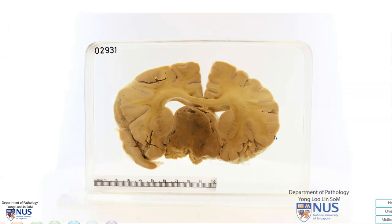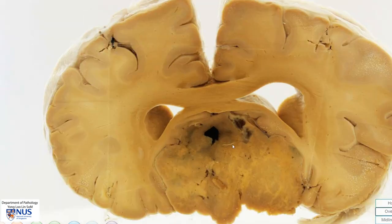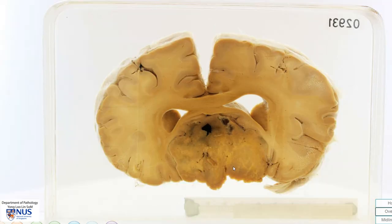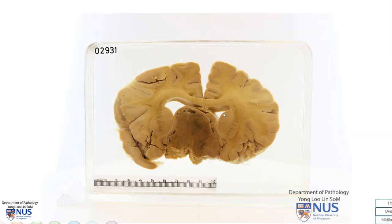On this surface we can see that there are several cystic areas within the mass. The classical differential diagnosis of a tumour mass in the sellar region is a pituitary tumour, and the diagnosis here is pituitary adenoma.